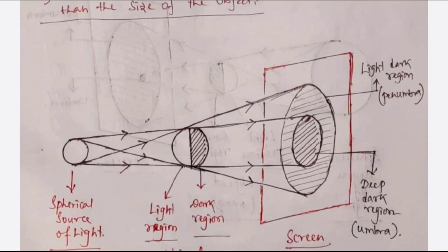In the next diagram, the source of light is a little bit bigger than the previous one, but the size of the source of light is still smaller than the object. The object shape is spherical. How it will form the shadow — one darker region and another less dark region — that is called umbra and penumbra. On the screen you can see the deep dark region formed at the center, called umbra, and around it a less dark region called penumbra for this spherical object.